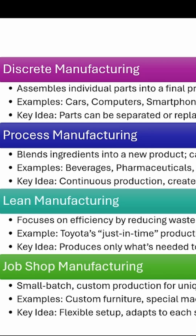Process manufacturing is all about blending ingredients into something that can't really be separated. Process manufacturing is used for things like chemicals, beverages, and pharmaceuticals. These are examples of process manufacturing.